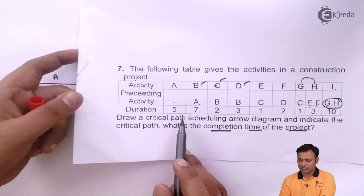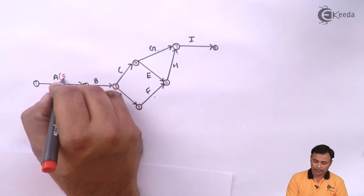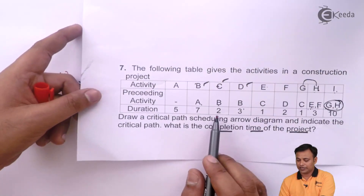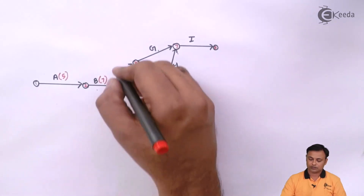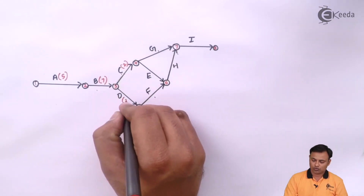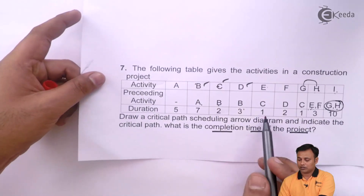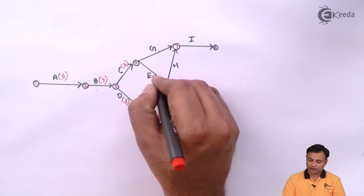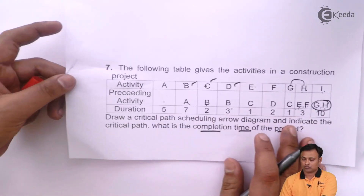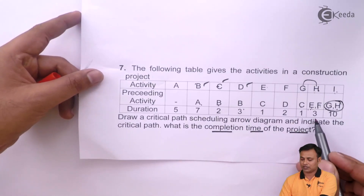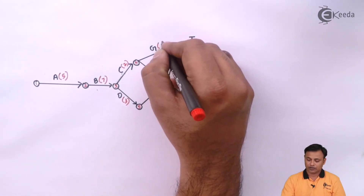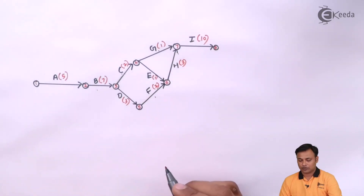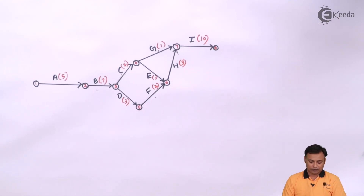Now I will note down the durations. For A the duration is 5, B is 7, C is 2, D is 3, E is 1, F is 2, G is 1, H is 3, and I is 10. We are done with the diagram and the numbering.